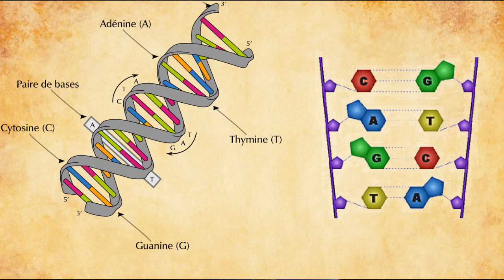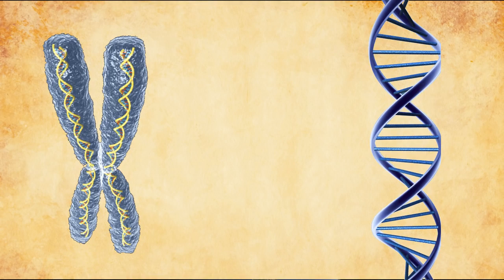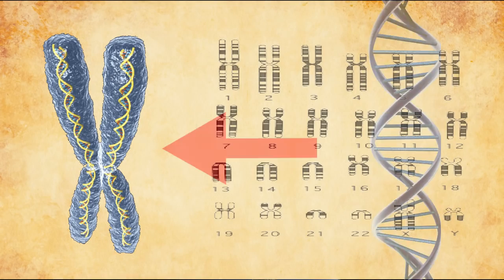These long helix structures, called DNA, are tightly wound together to make them more compact in your body — otherwise they would be kilometers and kilometers long, really they would be, give it a Google. When wound tightly together, the DNA is called a chromosome. And chromosomes always come in pairs in your body. Every human has 23 pairs of chromosomes, so every human has 46 chromosomes.